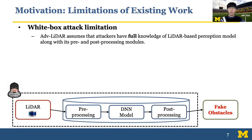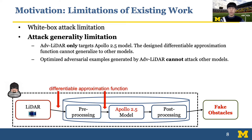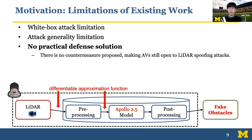However, we find that ADV-LiDAR suffers from several inherent limitations. First, it suffers from a white-box attack limitation: ADV-LiDAR assumes adversaries have full knowledge of the LiDAR-based perception models, including pre- and post-processing modules, which is not realistic. Second, ADV-LiDAR suffers from generality issues — it only targets one specific model, Baidu Apollo 2.5, and designs specific differentiable approximation functions for it, making it hard to transfer to other models. Most importantly, to the best of our knowledge, there is no practical defense solution proposed, leaving AVs open to LiDAR spoofing attacks.